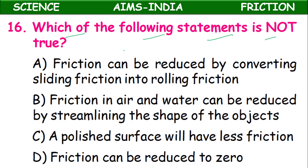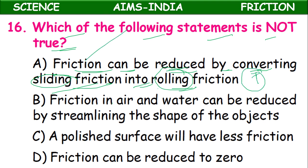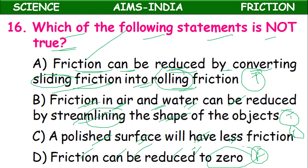Sixteenth question: Which of the following statements is not true? Friction can be reduced by converting sliding friction into rolling friction — true. Friction in air and water can be reduced by streamlining — true. Polished surfaces have less friction — true. Friction can be reduced to zero — wrong, because friction can be reduced but we cannot make it completely zero. So option D is the false statement, and the correct answer to 'which is not true' is option D.